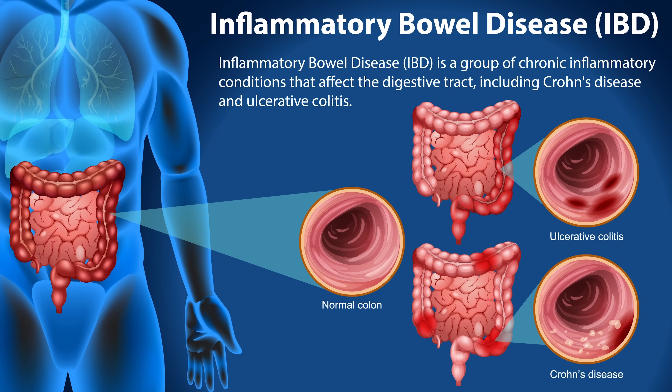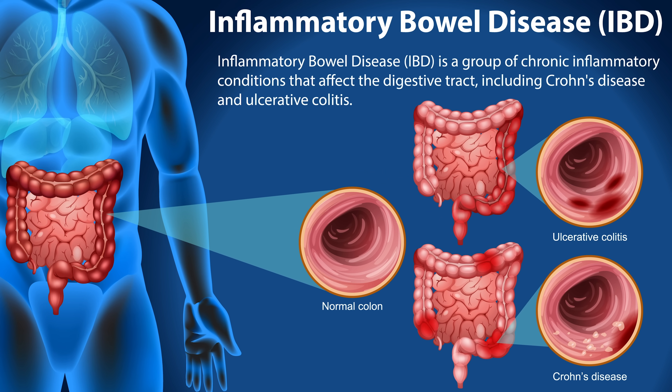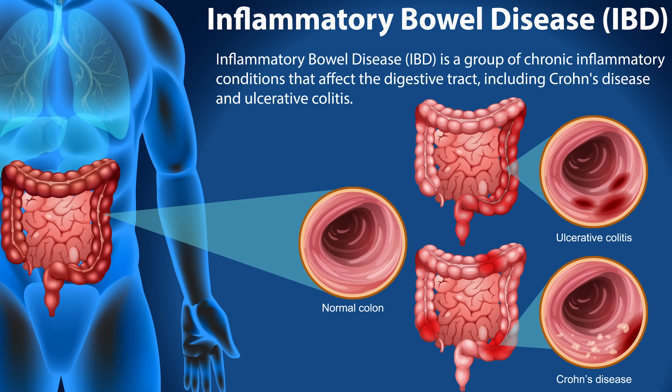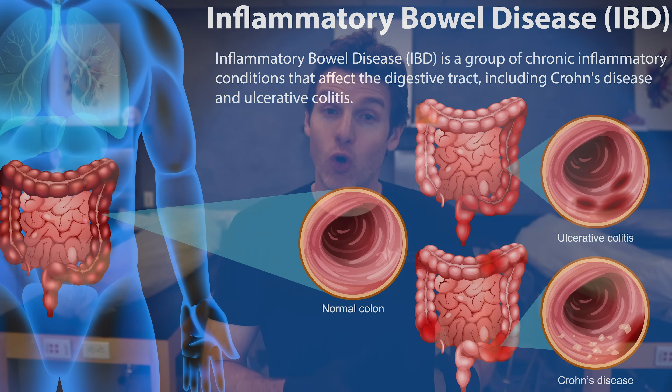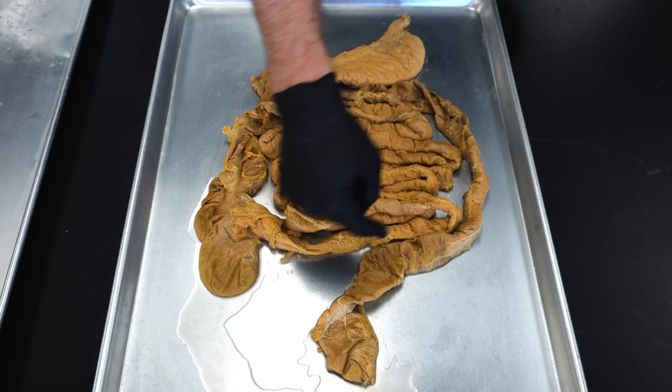Inflammatory bowel disease, or IBD, is another cause of rectal bleeding. This term encompasses conditions like Crohn's disease and ulcerative colitis, both of which cause chronic inflammation of the gastrointestinal tract. In ulcerative colitis, the inflammation is usually limited to the rectum and colon, leading to frequent episodes of bloody diarrhea, abdominal pain, and urgency to have a bowel movement.